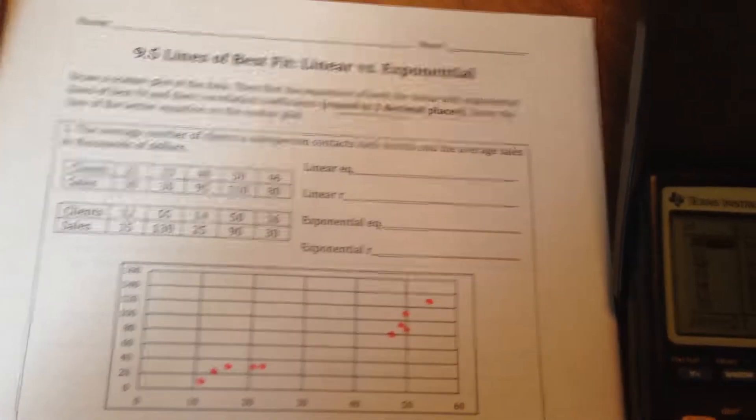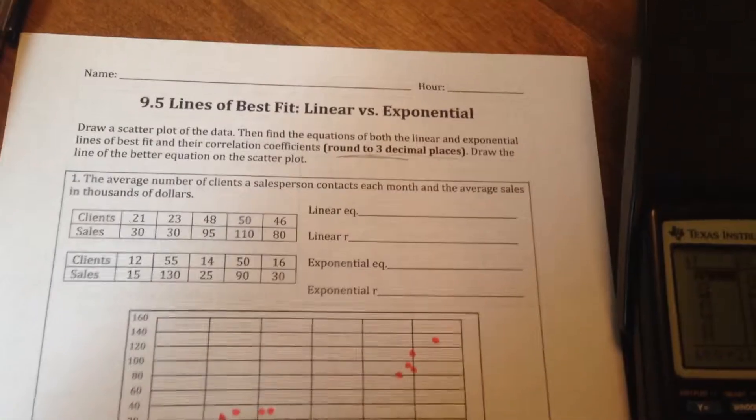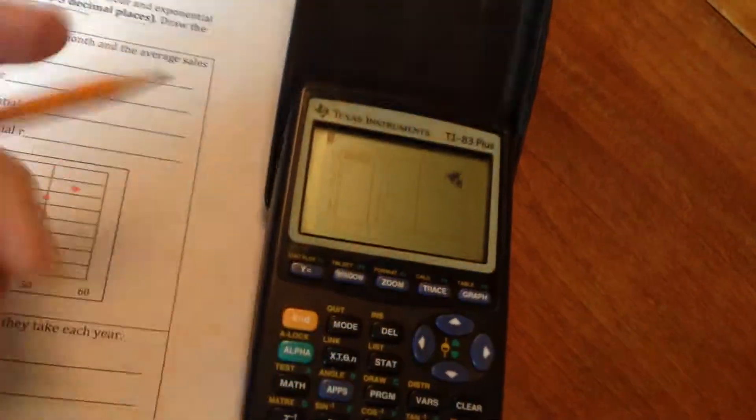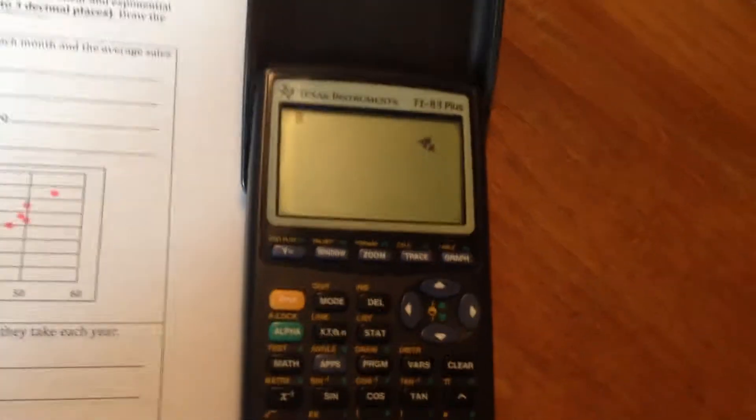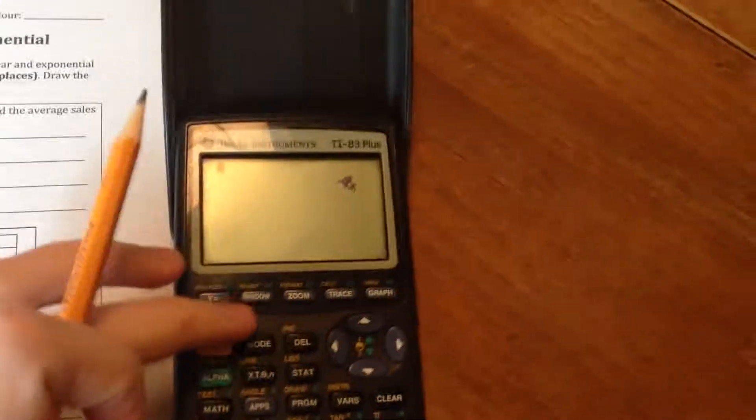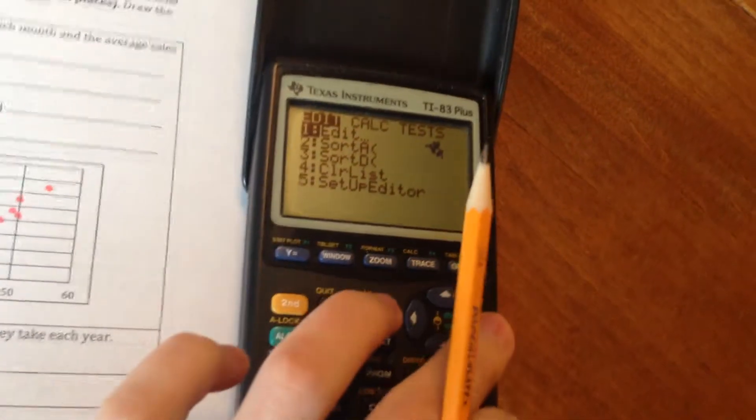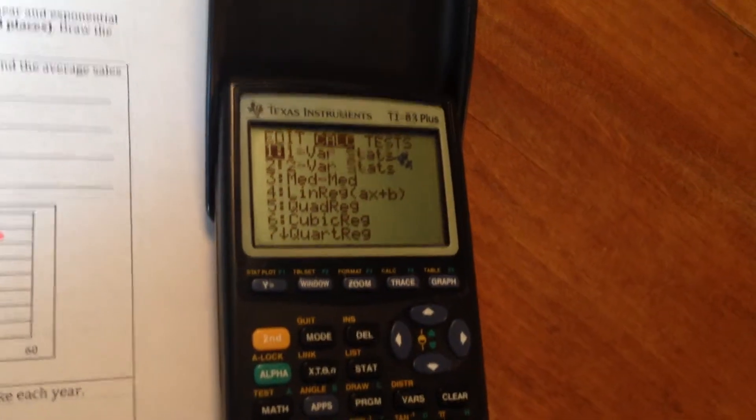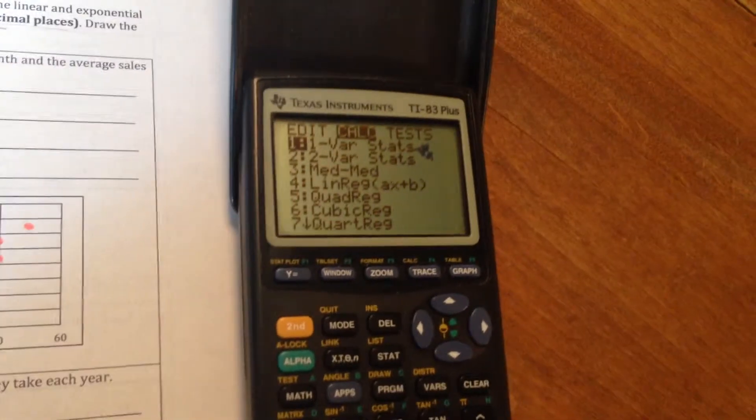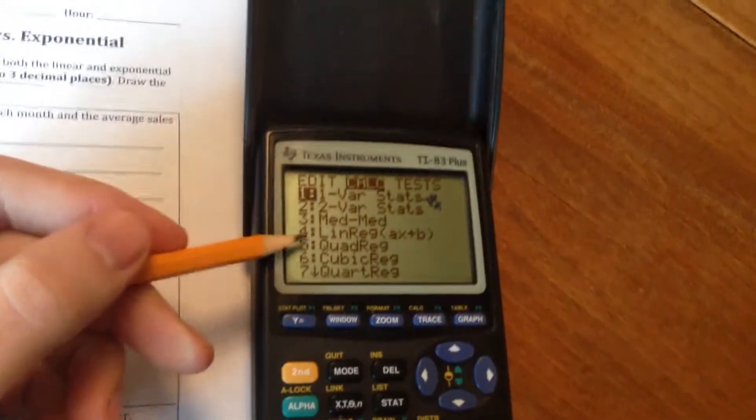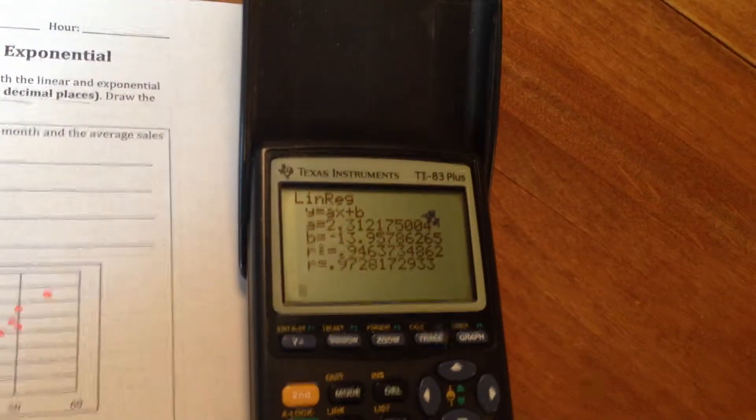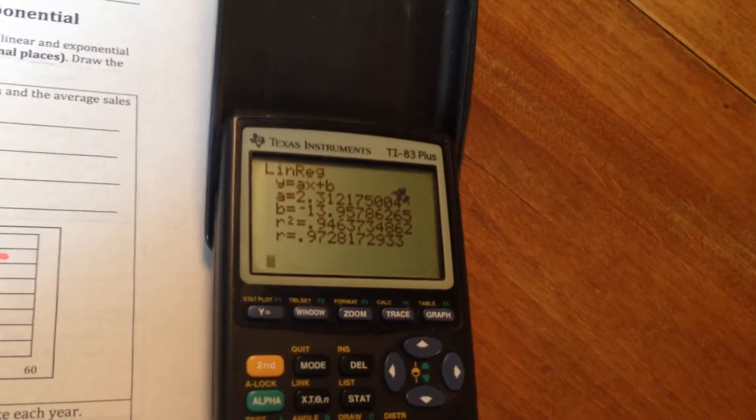Now we need to find the linear equation and the linear regression. Then we're going to find the exponential equation and the exponential regression. So here's how you're going to do that. Let's just go second mode to get us back to our home screen because that's going to help us quit out of what we were doing. And then we're going to push stat. Push the right arrow to go over to calculate. And now, to start off, we want to find the linear regression. We want to know which straight line best fits this data. So we're going to pick option four because that's what that means is a linear regression. Option four. And push enter.